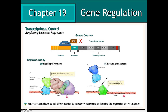Conversely, regulatory elements known as repressors can bind to the enhancer region and thus block or down-regulate the rate of transcription. Repressors can do this in either one of two ways: the binding of a repressor to the enhancer region can block the promoter region from associating with vital transcription factors, or a repressor can physically block the enhancer from associating with activators. Thus, repressors can contribute to cell differentiation by selectively repressing or silencing the expression of certain genes in certain cells.